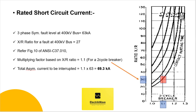Now let's calculate the rated short circuit current of the circuit breaker with the following inputs. The three-phase symmetrical fault level at 400 kV bus is 63 kA. The X by R ratio for a fault at 400 kV bus is 27, as per the system study report.